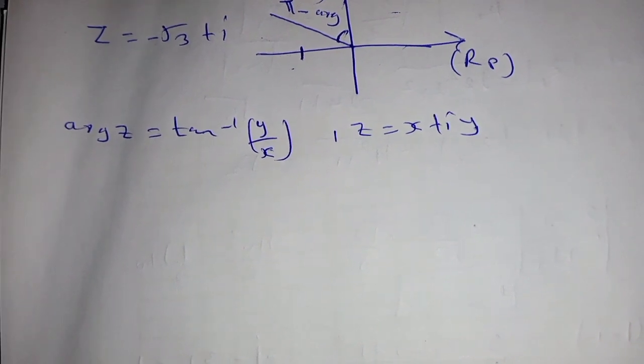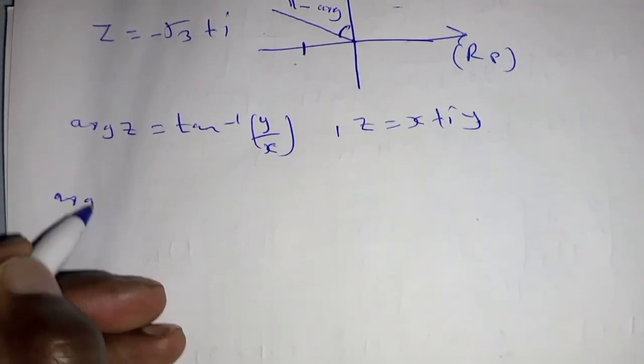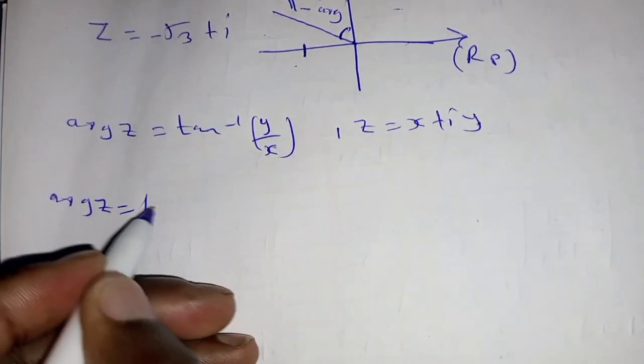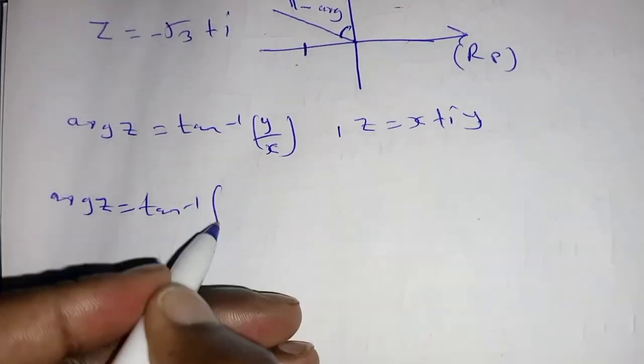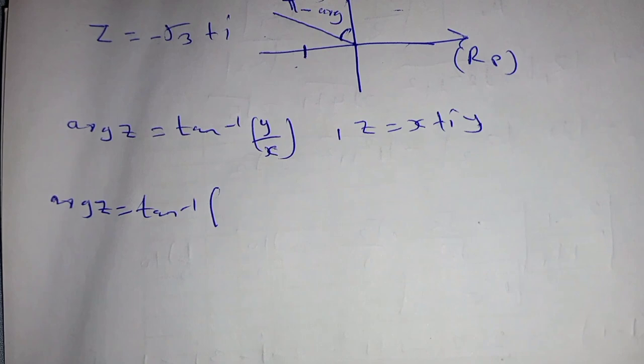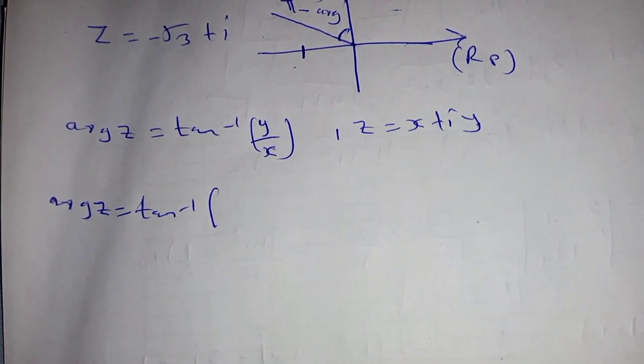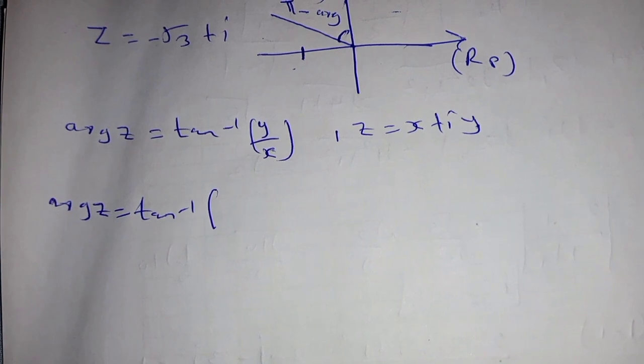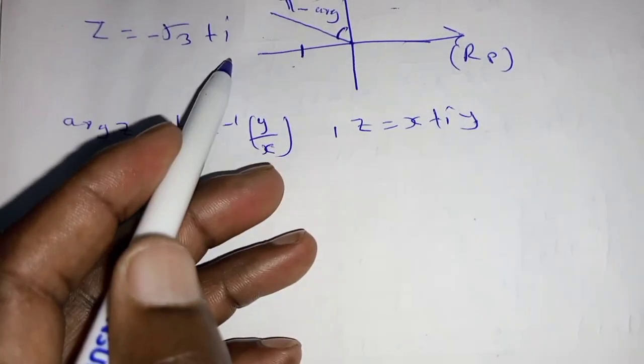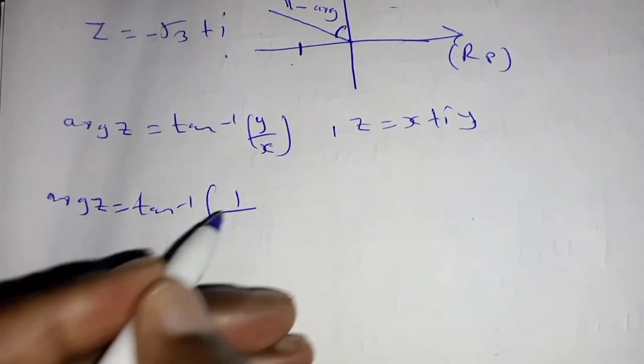Now in our case, our argument of z will be given by tan inverse of our y. In that case, y is one here, we have one divided by...